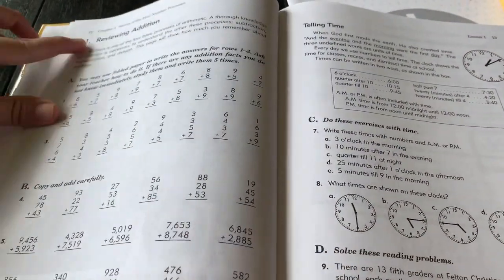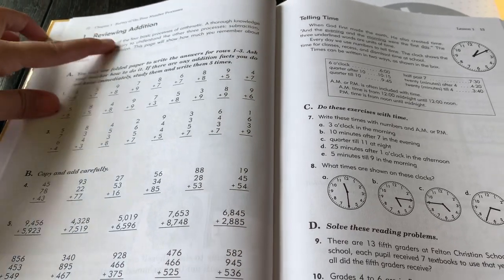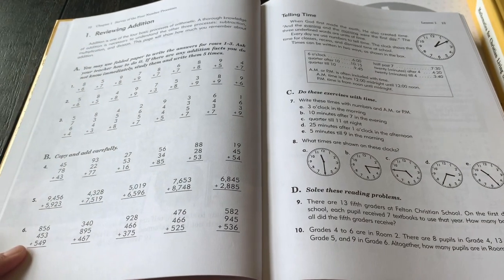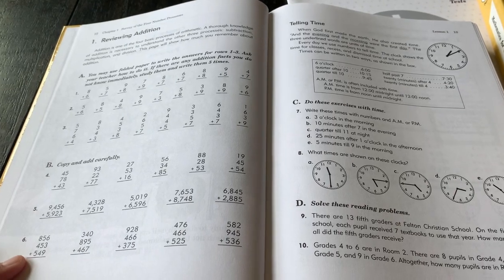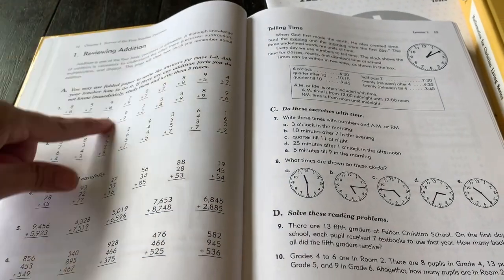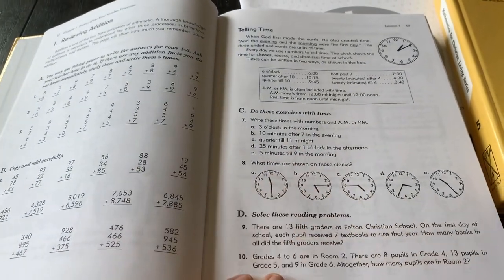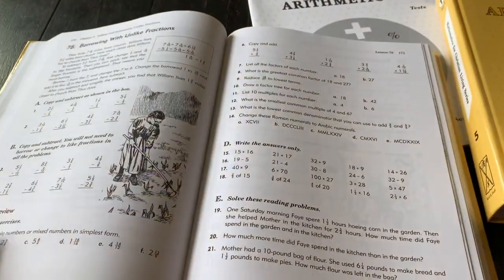Then you will have lesson one. So the lessons are all numbered for you and they are given a name. Usually on the left side of the sheet is either the new concept or that's where review will start. So most of the time this will be a new concept, and on the right side of the page is where they will have review over materials that's already been covered.